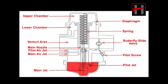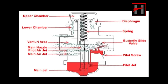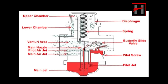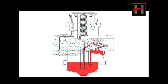The butterfly slide is initially at almost closed condition. By opening the butterfly slide, velocity of the gases increases in the venturi area and a vacuum is created. The piston is lifted up due to the pressure difference between the lower chamber and the upper chamber of the diaphragm. A controlled amount of fuel is sucked into the mixing chamber through the main jet. At full opening of the butterfly slide, the piston valve is lifted fully along with the jet needle and fuel is supplied mainly through the main jet.